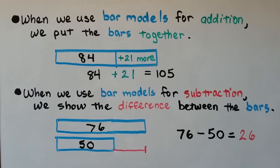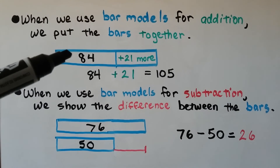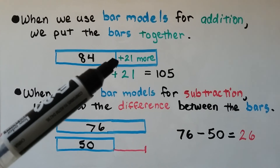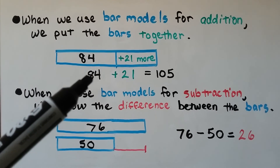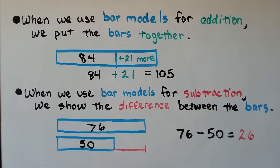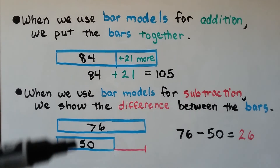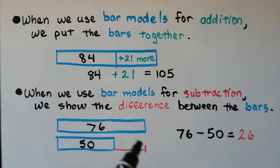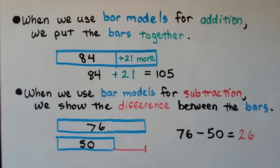When we use bar models for addition, we put the bars together. If we had 84 and 21 more than that, we would do 84 plus 21, which is equal to 105. When we use bar models for subtraction, we show the difference between the bars. We have two bars for the subtraction — we show the minuend and the subtrahend, and whatever this amount is would be the difference between the two bars. We would do 76 minus 50, which is equal to 26, so this area by the red line would be 26.